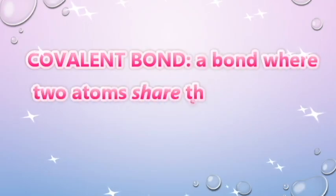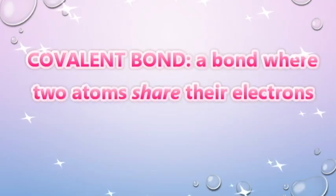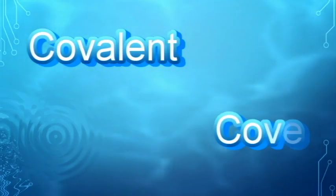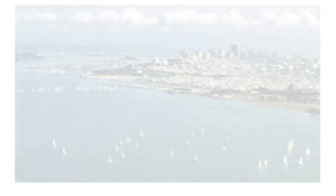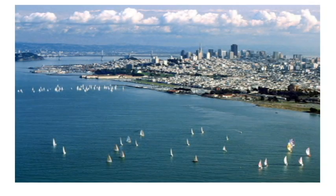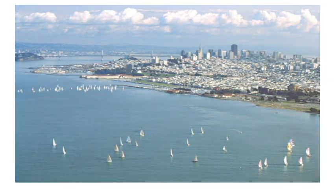A covalent bond is a bond where two atoms share their electrons. When you think of the word covalent, think of the word cove, which is an area where ships and boats can share the bay with each other.